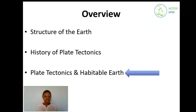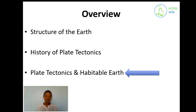We now know that the earth is round on the outside and on the inside has a core, mantle, and crust. We also learned that the plates drift, caused by convection cells, and we learned how they drift — moving away from, towards, or past each other. Now we are going to see how that movement of plates causes the earth to be habitable.